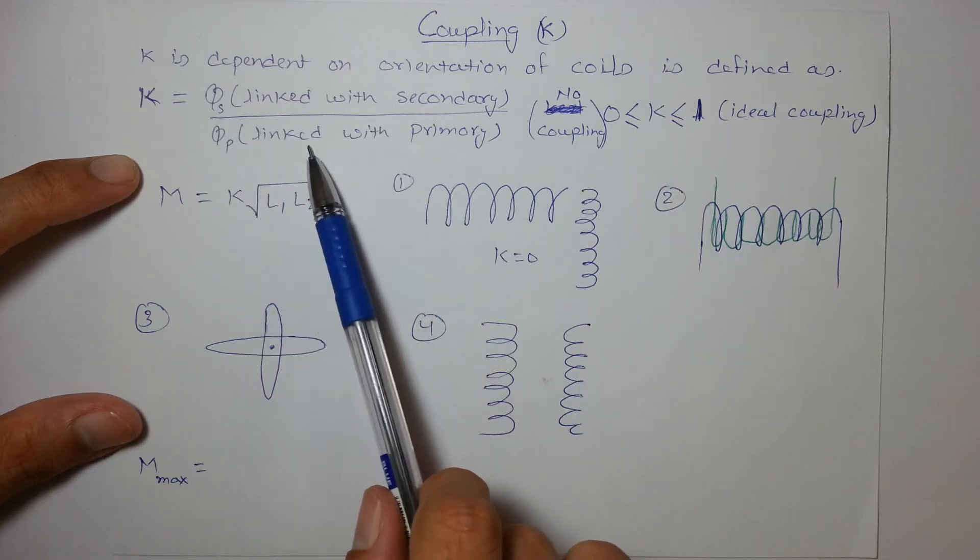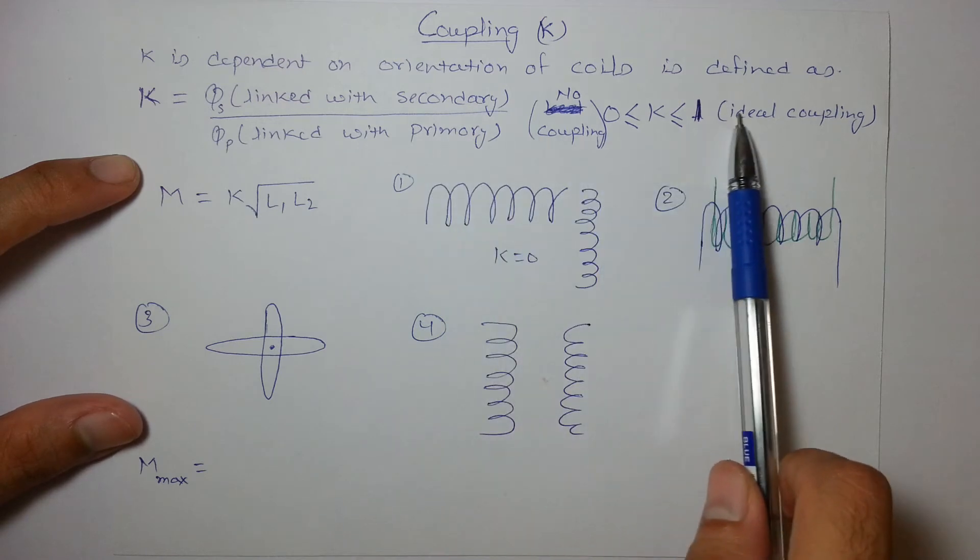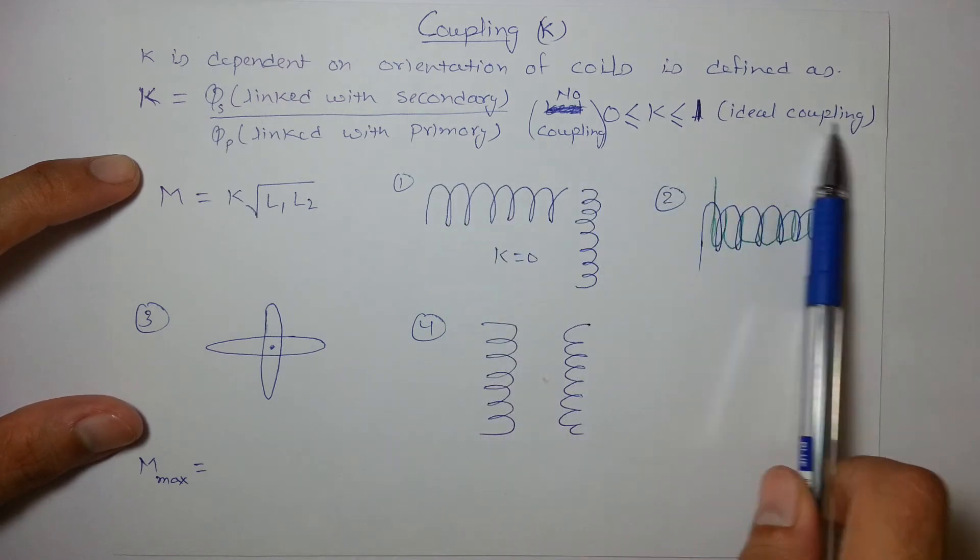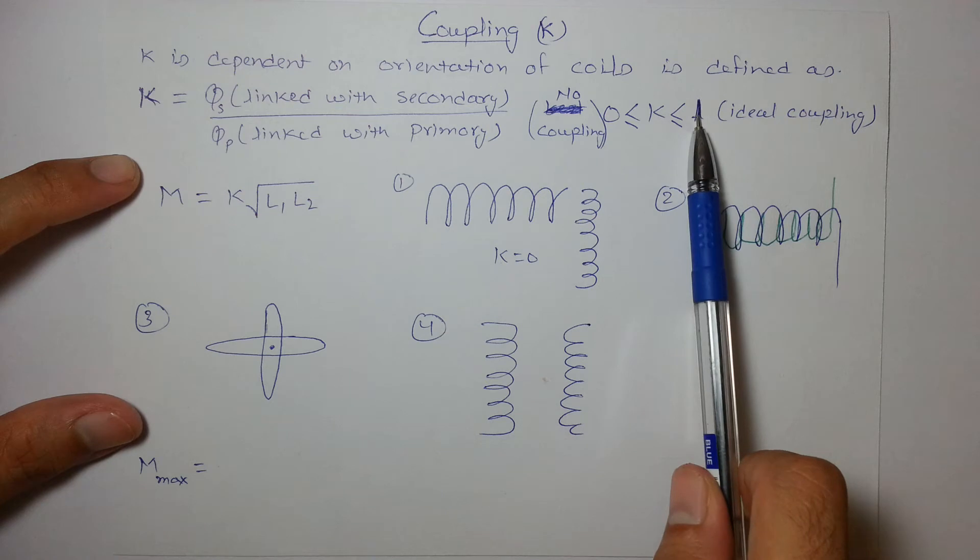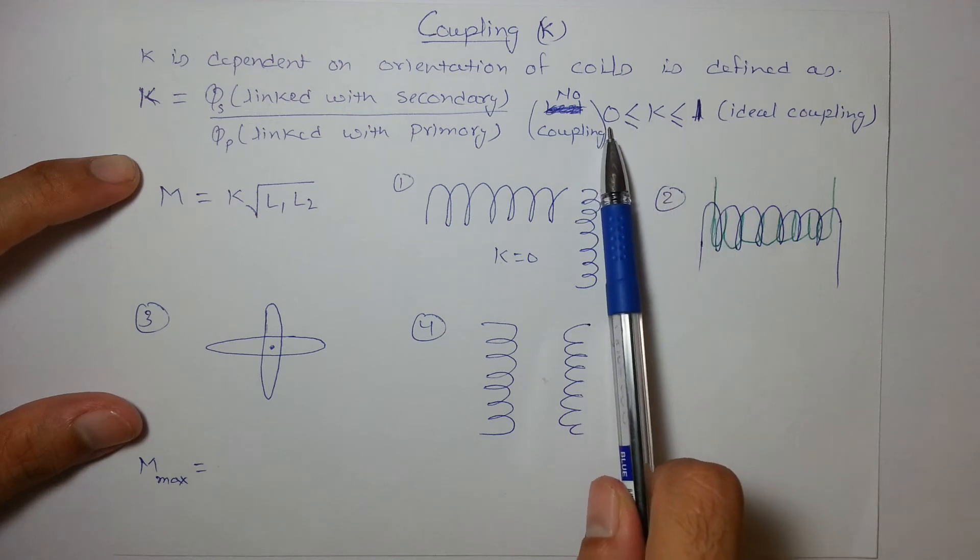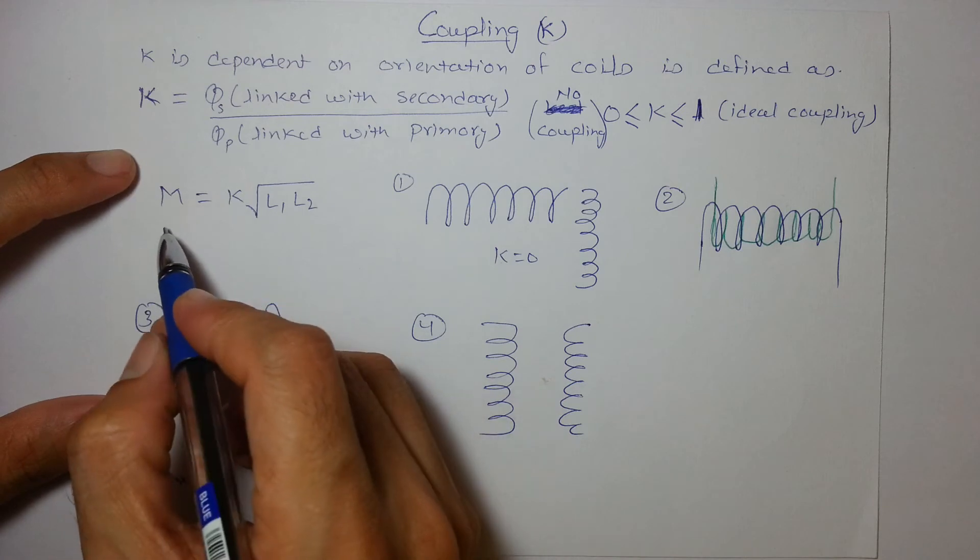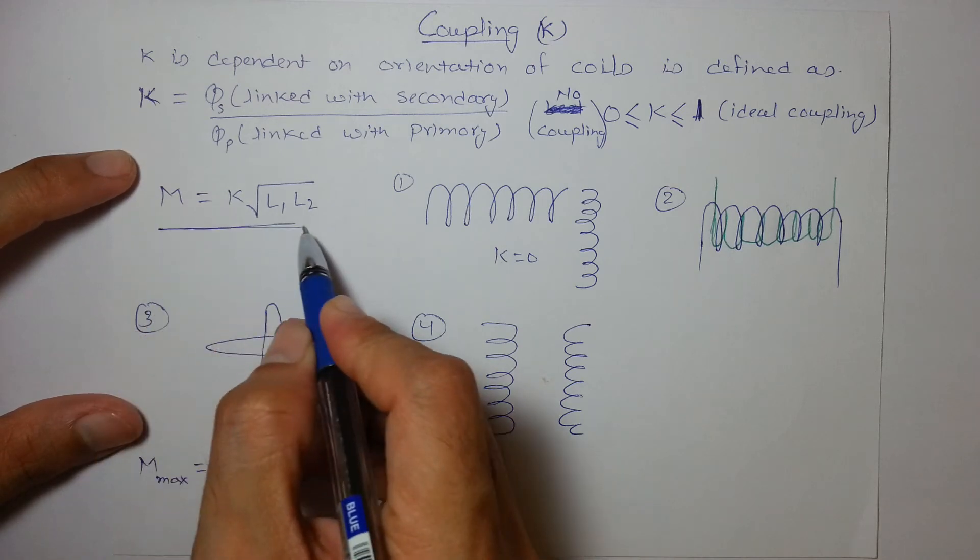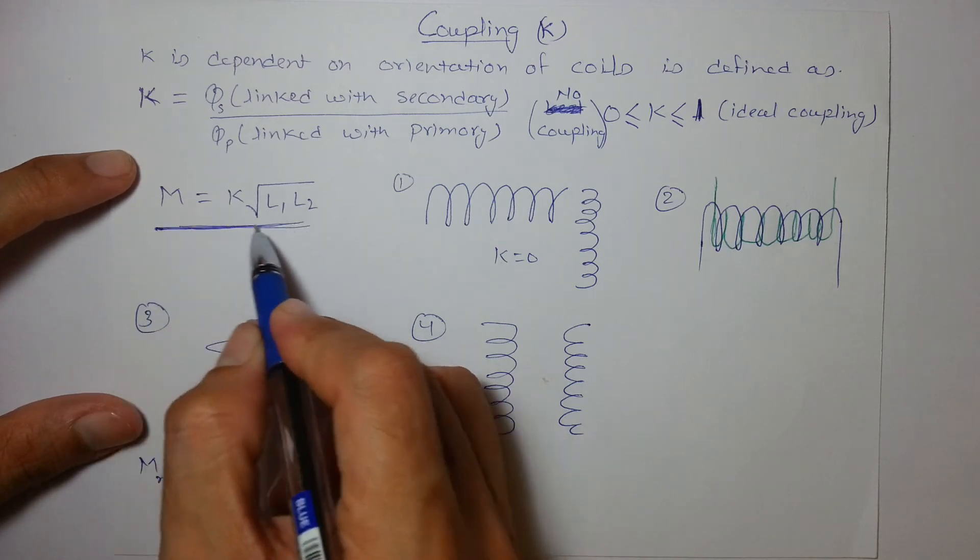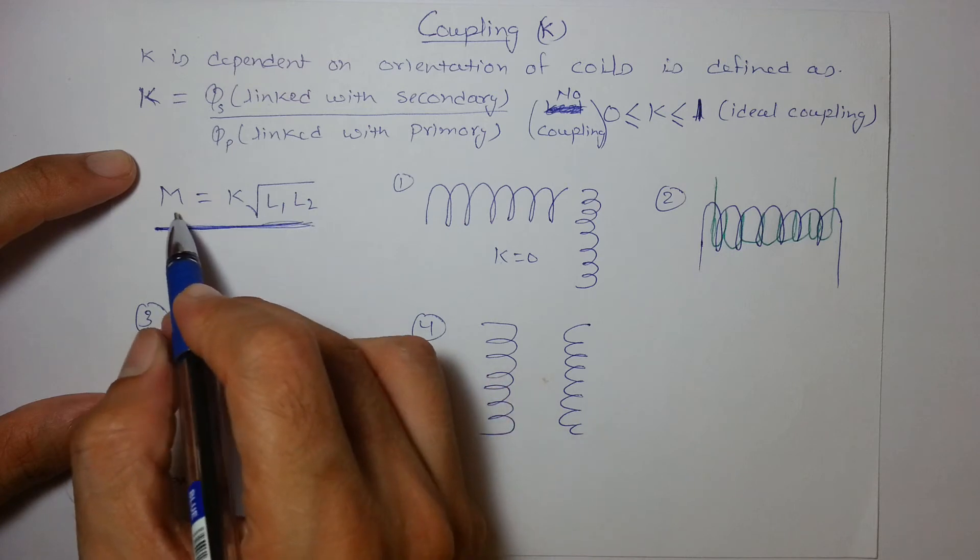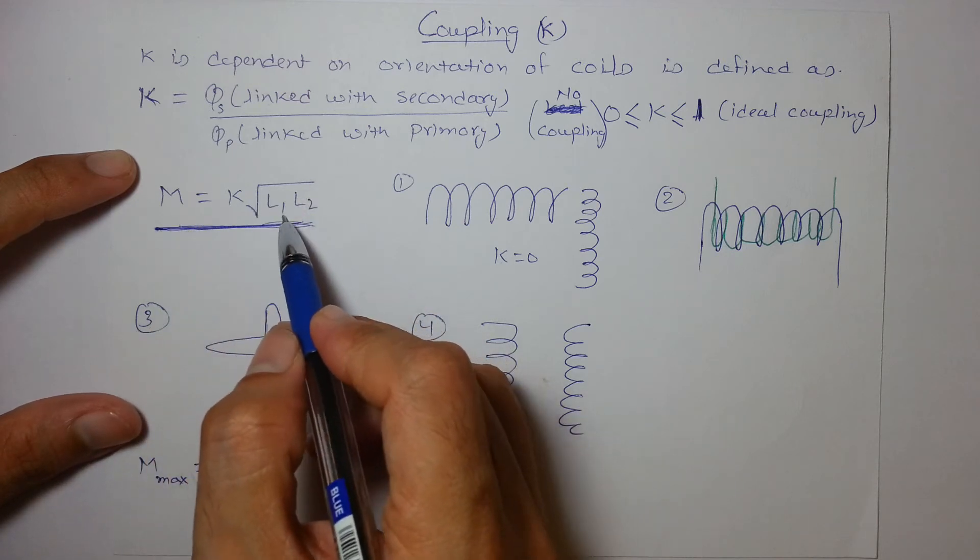Ideal coupling is for K equal to 1 and there is no coupling for K equal to 0. So this is an important expression that should be remembered: mutual inductance is defined as K times root of L1 by L2.